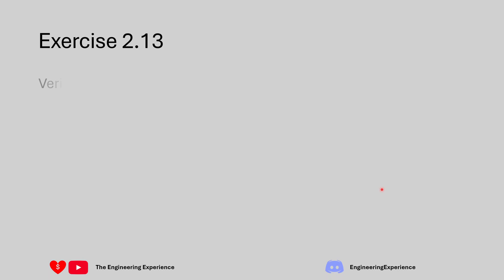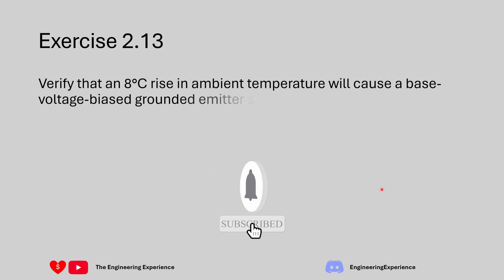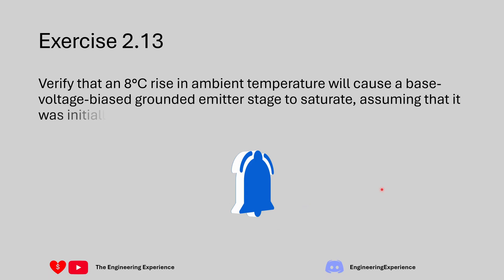Exercise 2.13 says that we need to verify that an 8 degree C rise in ambient temperature will cause a base voltage biased grounded emitter stage to saturate. We are assuming that the initial bias point for the circuit was half of the power supply so power supply is VCC and the collector voltage is basically half of our power supply.